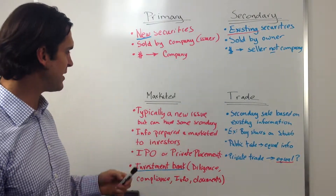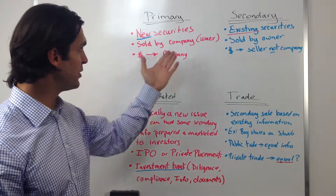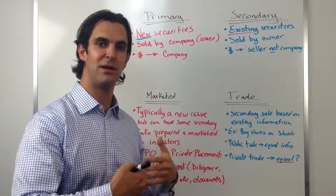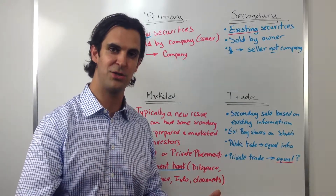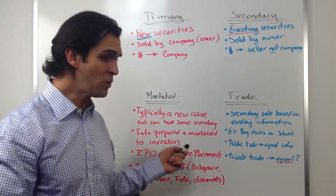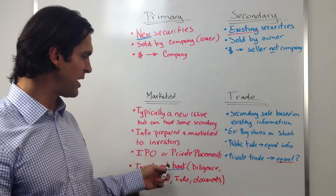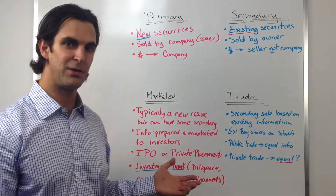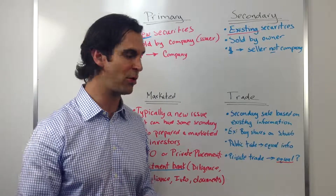The next series is marketed versus a trade. A marketed transaction is typically a primary, although you can have some secondary shares as well. So if a company is looking to raise 20 million dollars to build a facility, and at the same time some of the family members that own the company want to sell some of their shares, it could be a mix of primary and secondary. Typically they'll prepare an offering memorandum or management presentation — documents that investors can review to determine if they want to make an investment. An IPO or private placement would typically be examples of a marketed transaction. The firm would typically hire an investment bank, which would do background due diligence, prepare all the materials, ensure compliance with securities regulations, and close the transaction.